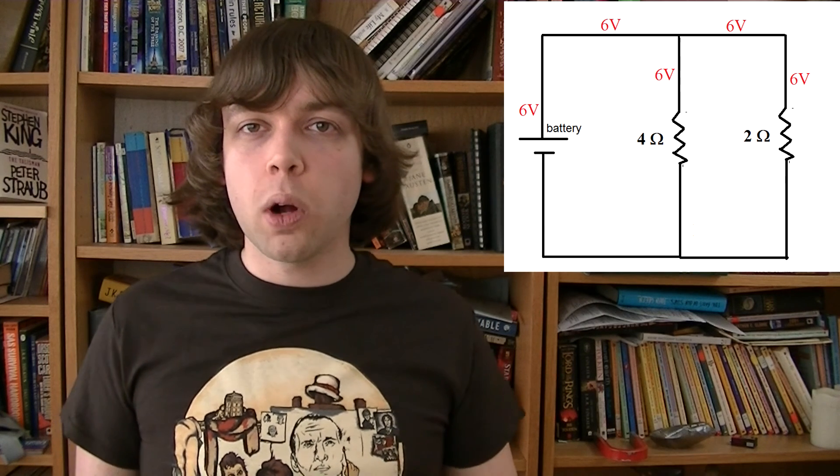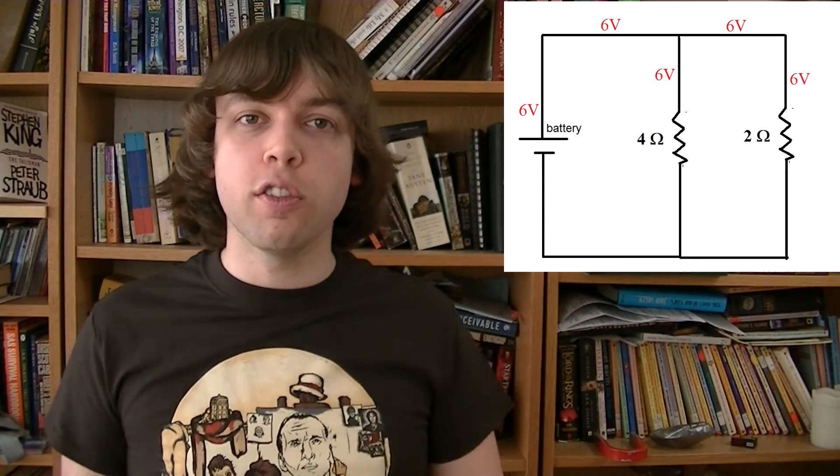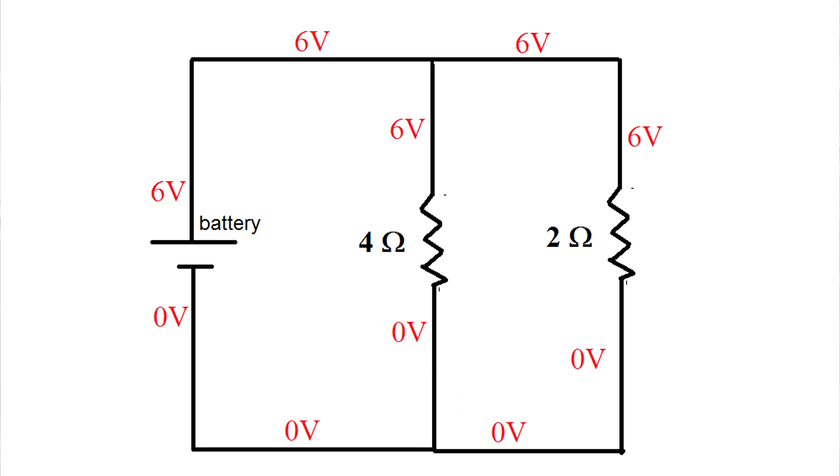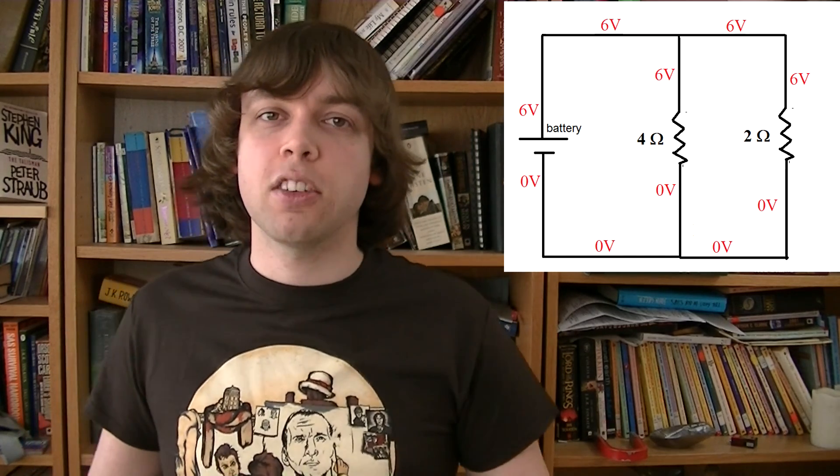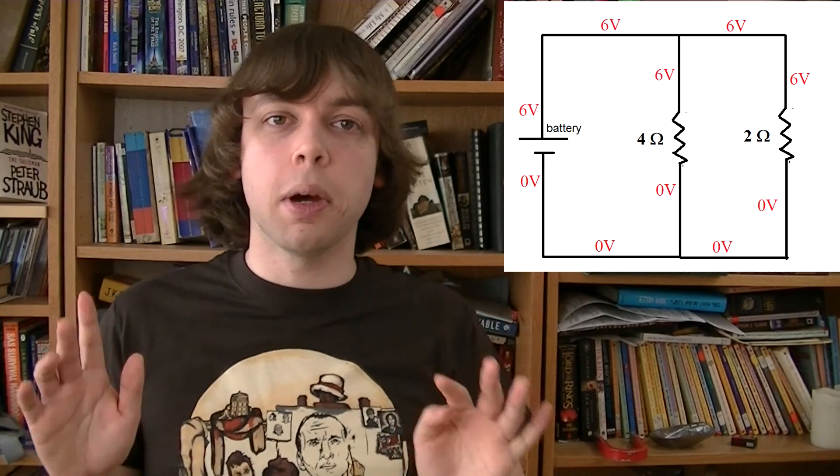But when you do, if there's only one resistor on each path, each one will separately use up the full voltage of the battery. So this entire section circuit has a potential of zero volts. The charges running through these paths are not going to meet any more resistors before getting back to the battery, so the potential difference has to be completely used up by then.